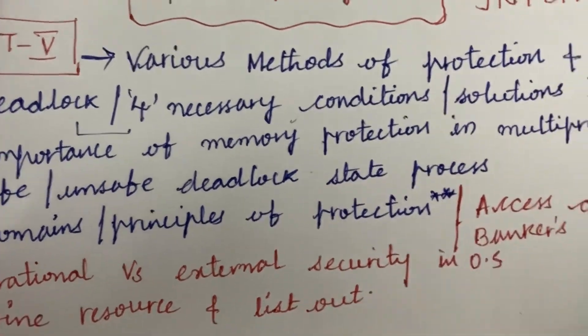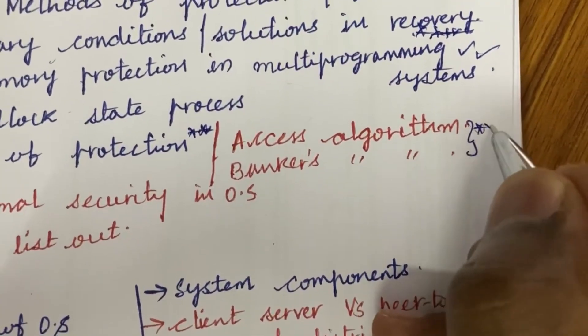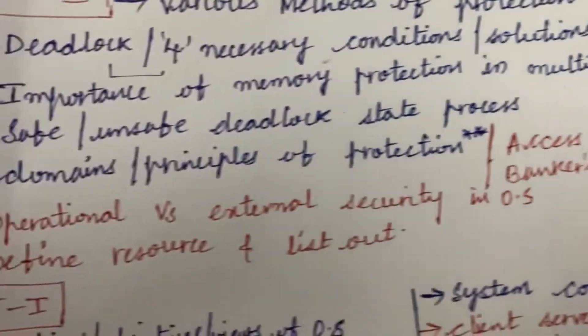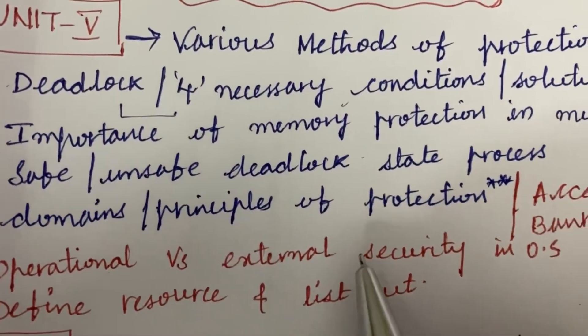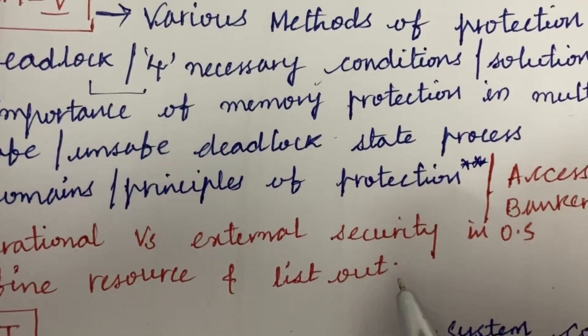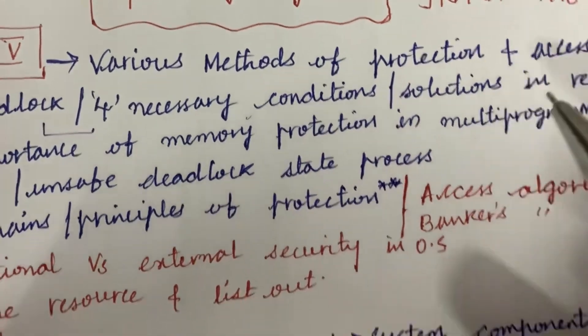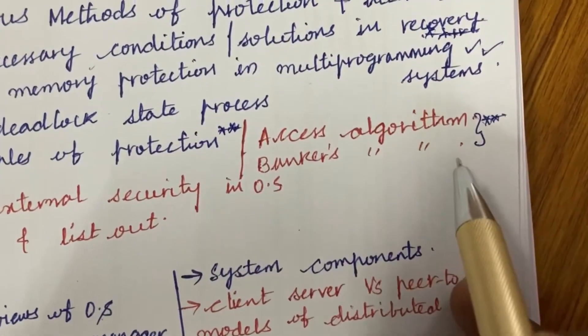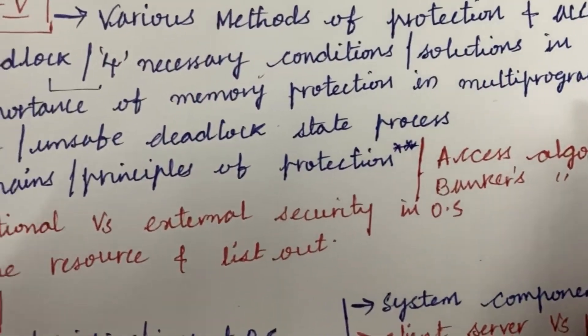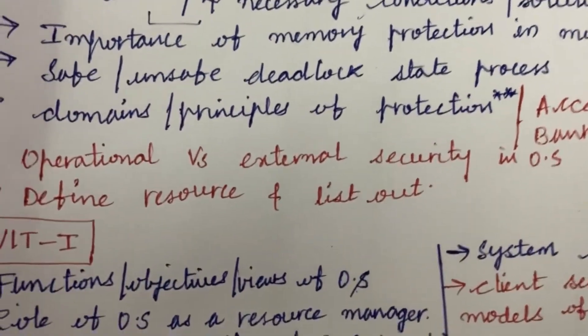Safe and unsafe deadlock state, process and domains or principles of protection is also very important. The access algorithm as well as bankers algorithm - we'll be getting one question from this concept. Operational versus external security in operating system and define resource and list out its types. Related to deadlock, memory protection, or access or bankers algorithm, you are going to get a 15 mark question in 8a as well as 8b.